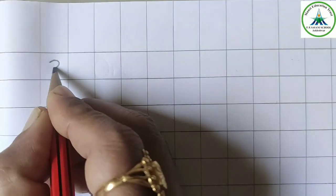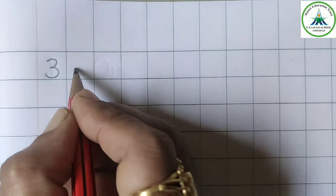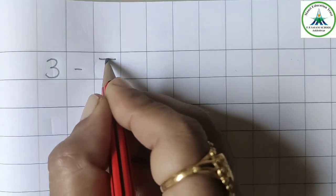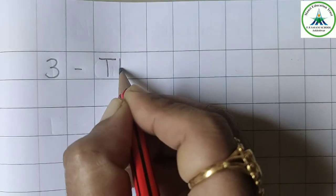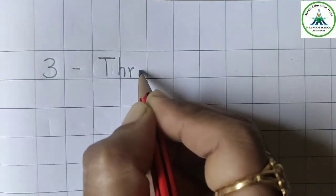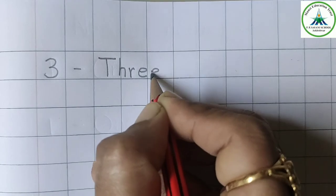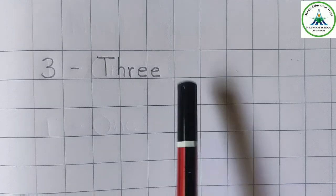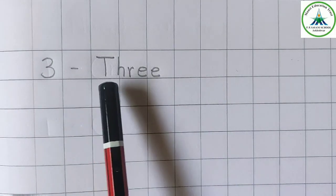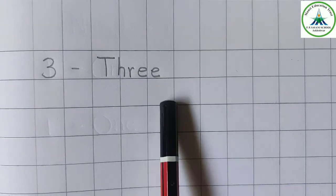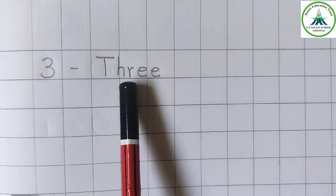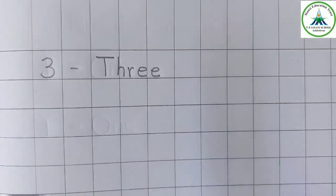This is number 3 and the spelling of it is T-H-R-E-E. T-H-R-E-E is 3. You can read it like this: T-H-R-E-E. It's your choice — you can say T-H-R-E-E or just 3.